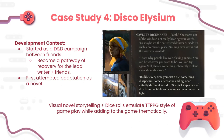It's emulated in TTRPG style by using dice rolls to decide all your skill checks, as you do in a tabletop game. In this game, most of your dice rolls are not great. The dice roll aspect is really important to the game thematically. A character you meet — a lady who gives you dice and talks about dice — says: 'That's why people like role-playing games — you can be whoever you want to be, you can try again. Still, there's something inherently violent about dice rolls. Every time you cast a die, something disappears — some alternate ending or an entirely different world.'